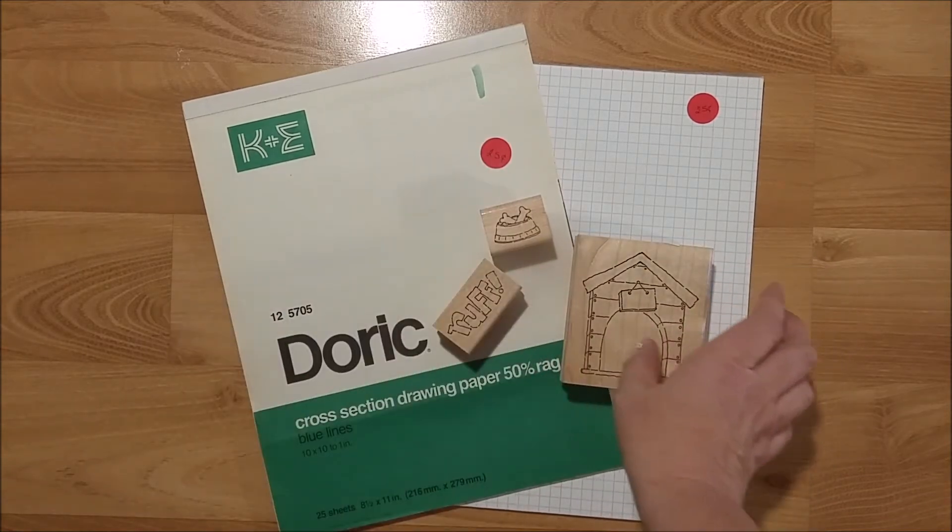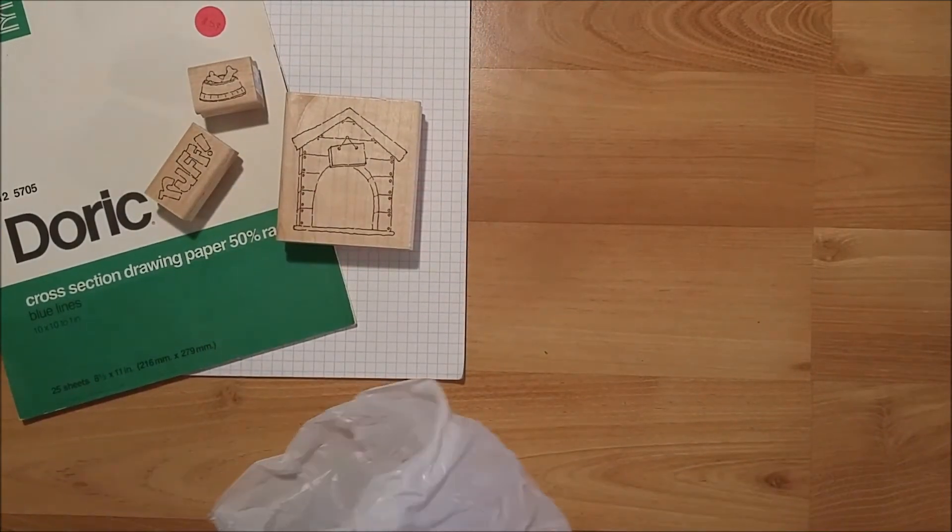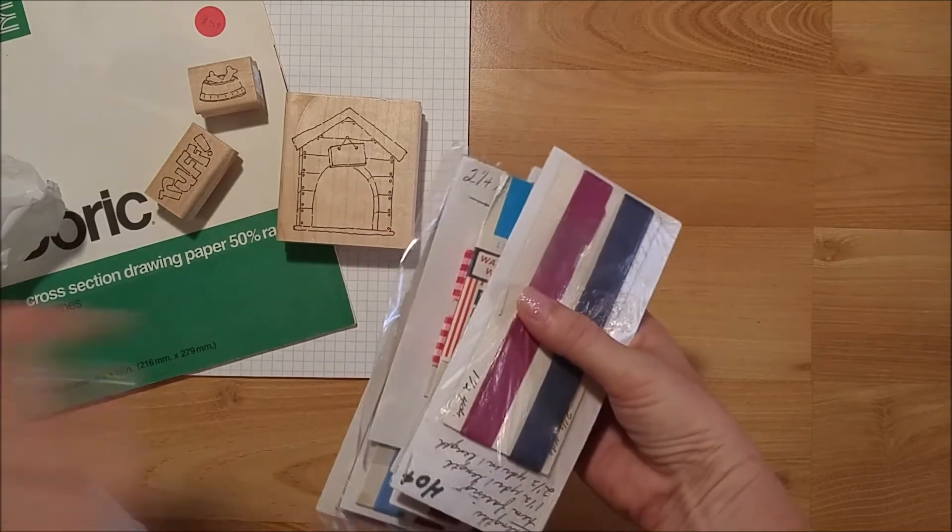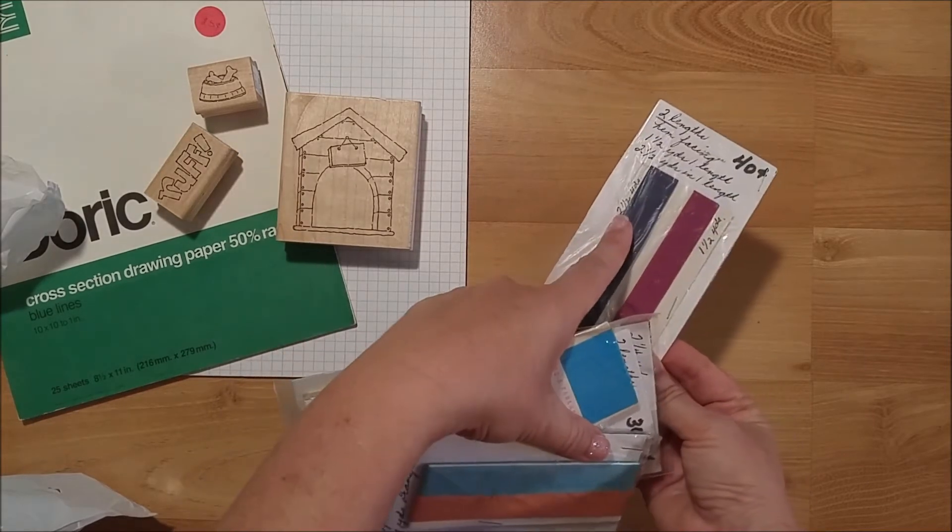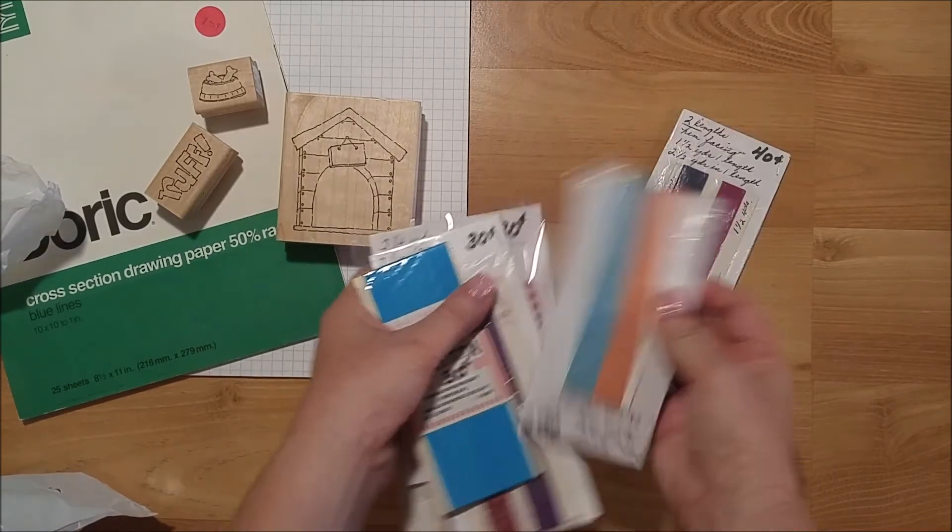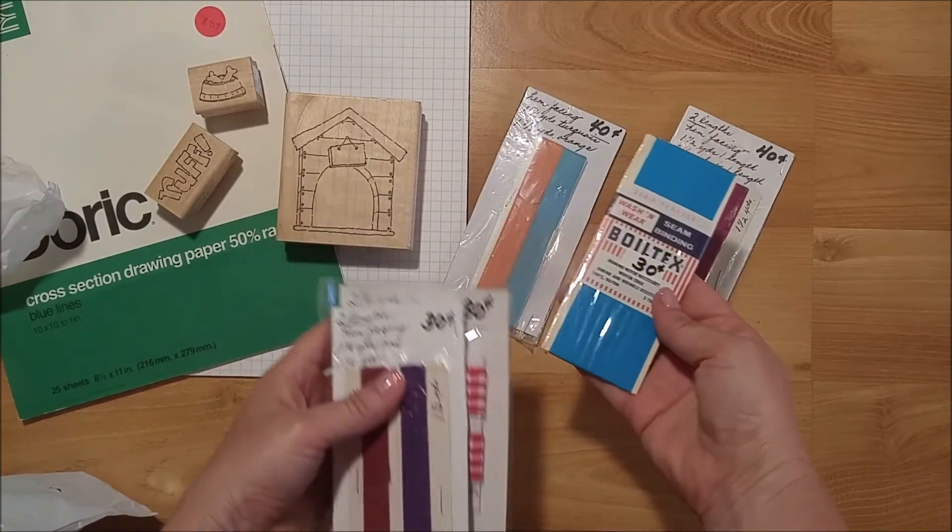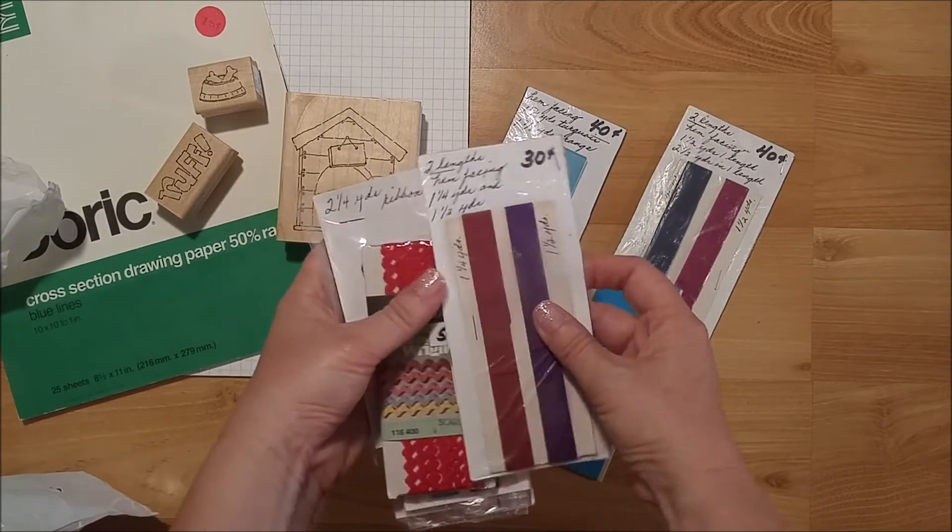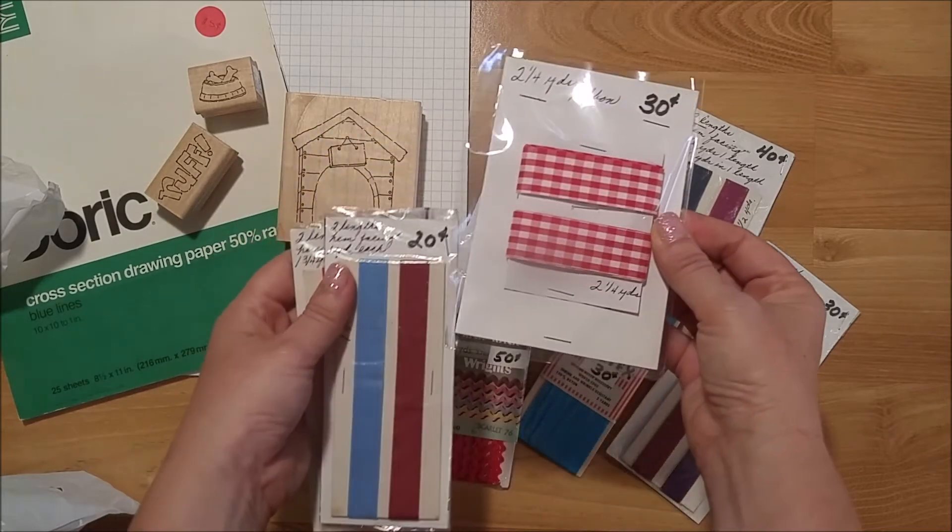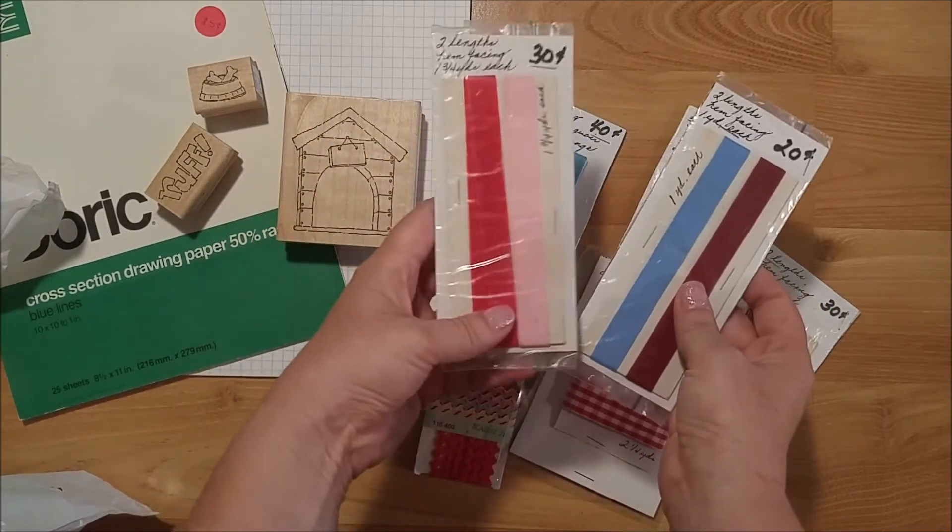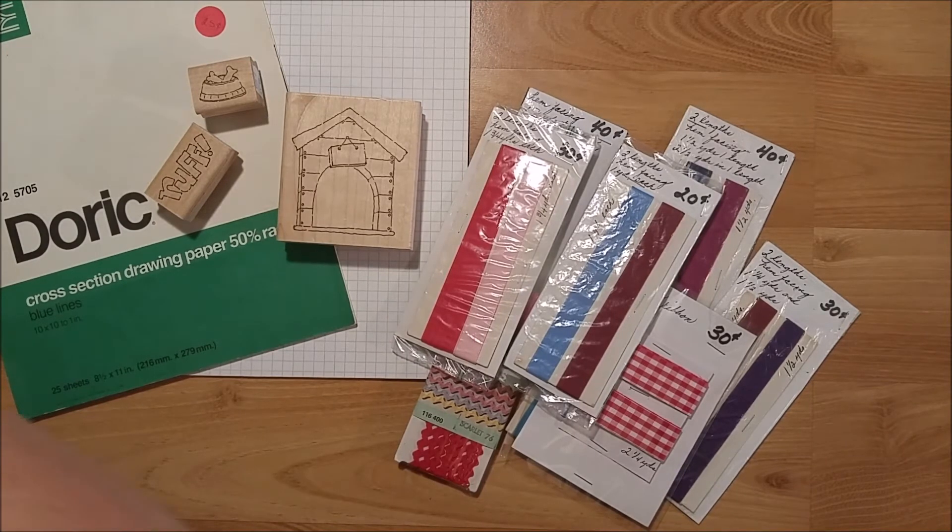Then I found a bunch of seam bindings and ribbons. Here's some blue and burgundy. This one has two and a half yards, and this has a yard and a half, so it's 40 cents. Here's some turquoise and orange that each have a little less than two yards. Then here's some turquoise, 30 cents, and purple and burgundy. Some rickrack, some gingham ribbon, and more red, pink, blue, and burgundy seam binding.